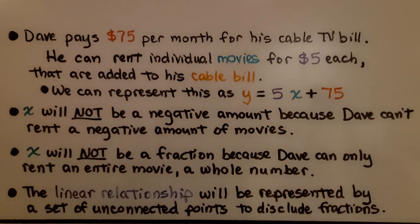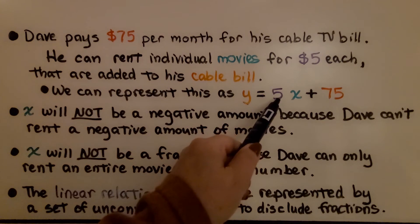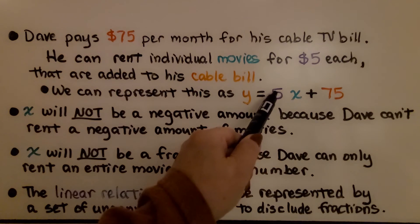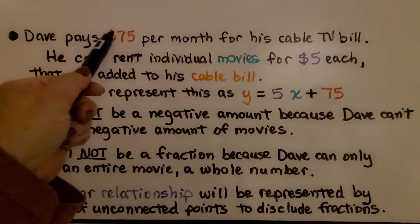In the last video, we also talked about Dave and his cable bill. Dave pays $75 per month for his cable TV bill. He can rent individual movies for $5 each that are added to his cable bill. We can represent this as y, that's the cable bill, equals 5 times x, that's the number of movies at $5 each, plus $75. That's the basic cable price, $75.